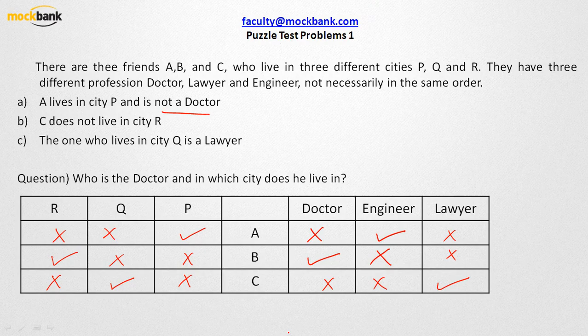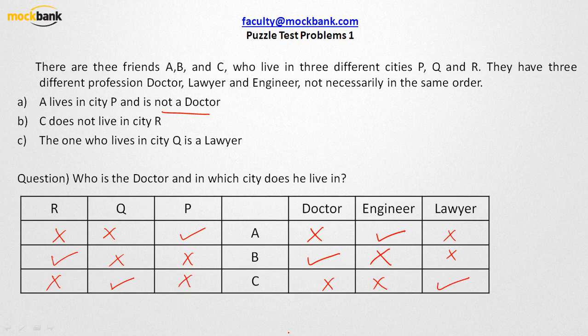Sometimes we face a data redundancy problem — we write the same piece of information time and again and do not know how to use it. Hence, in order to solve puzzle test problems, the technique I have demonstrated here is probably one of the best ways to write information systematically, because you don't even have to think more. You will be getting information step by step. The only thing is you need to know how to write it, and that is a matter of three to four questions — and you will start doing it very easily.